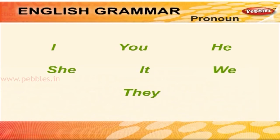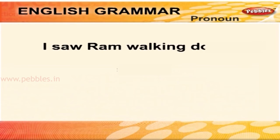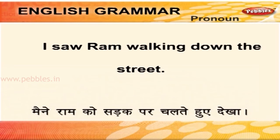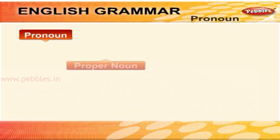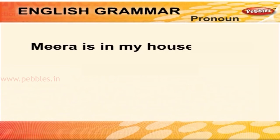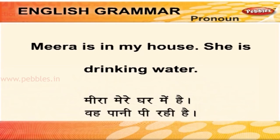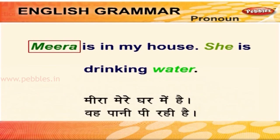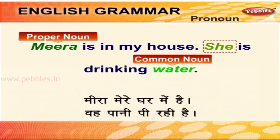इन प्रोणाउन को देखते हैं। मैंने राम को सड़क पर चलते हुए देखा — यहाँ आई एक प्रोणाउन है और राम एक प्रॉपर नाउन है। यहाँ मेरा प्रोणाउन है। Water — common noun hai. She — shabd pronoun hai.